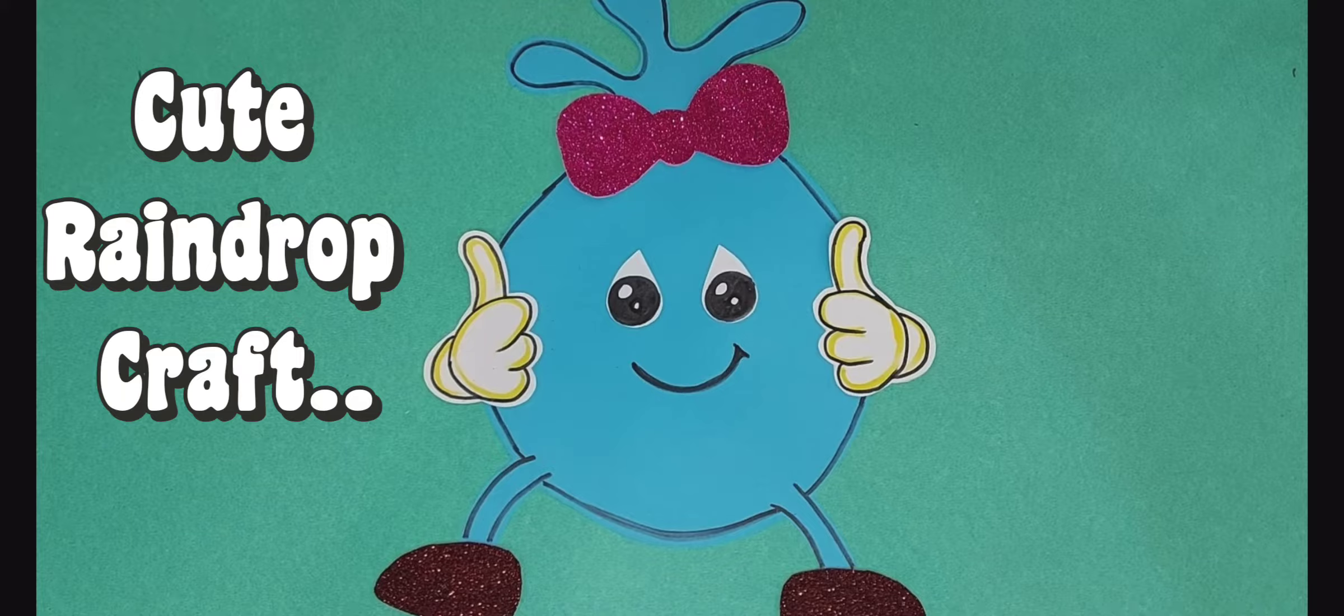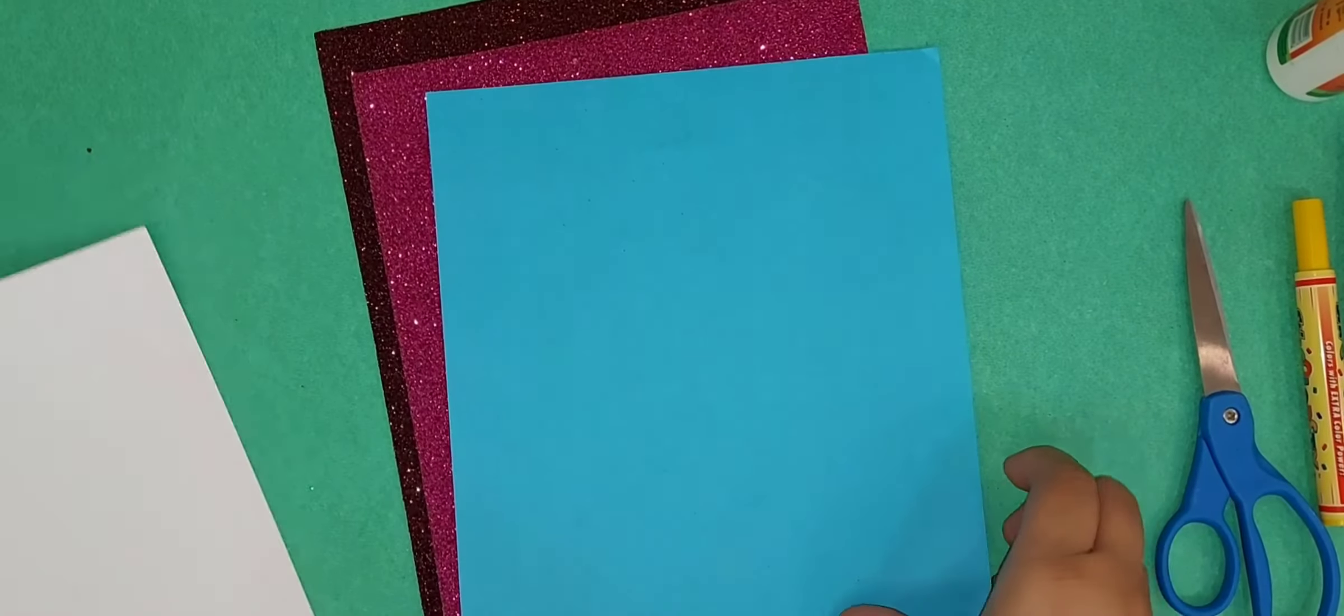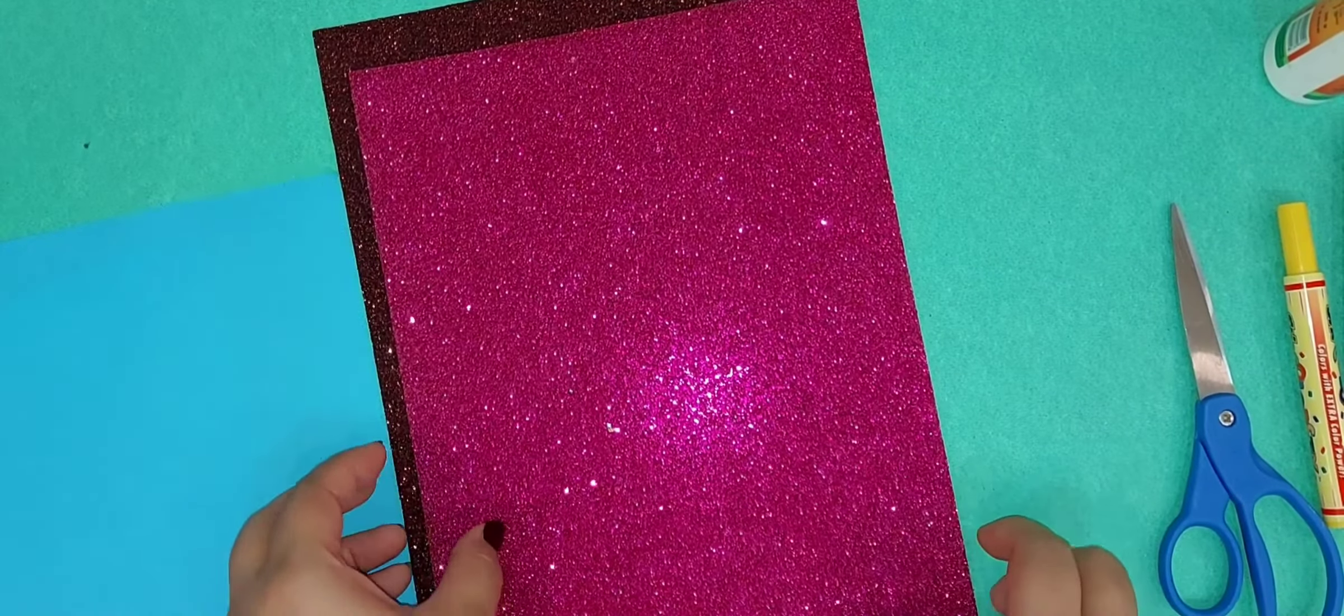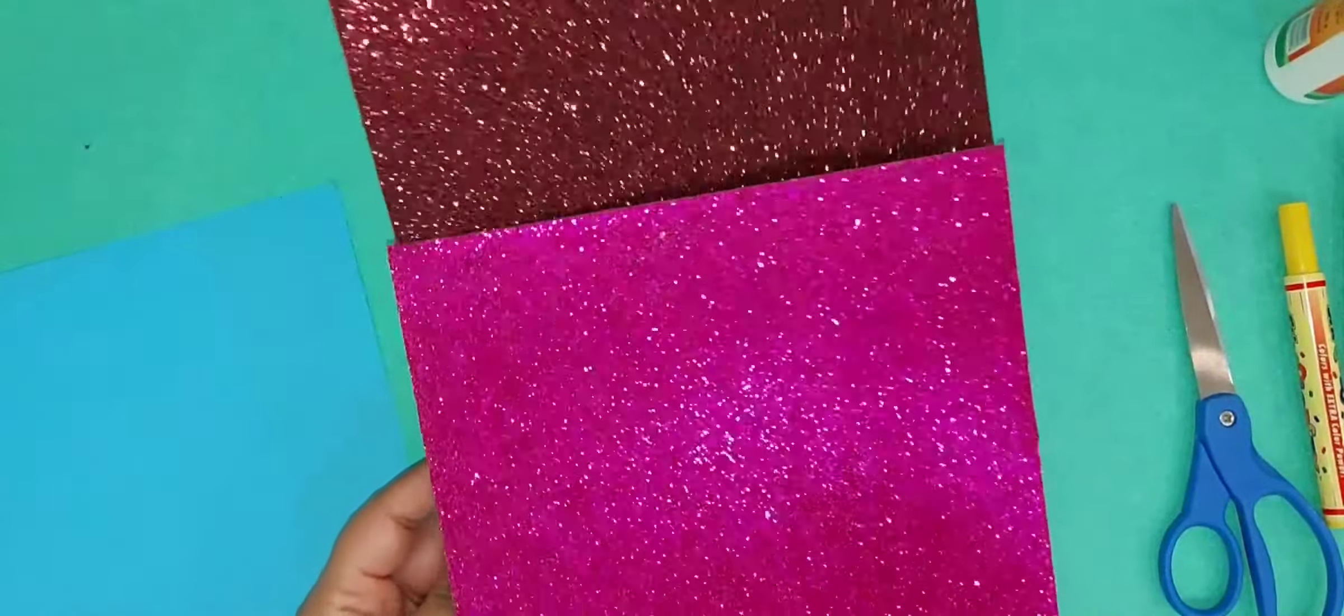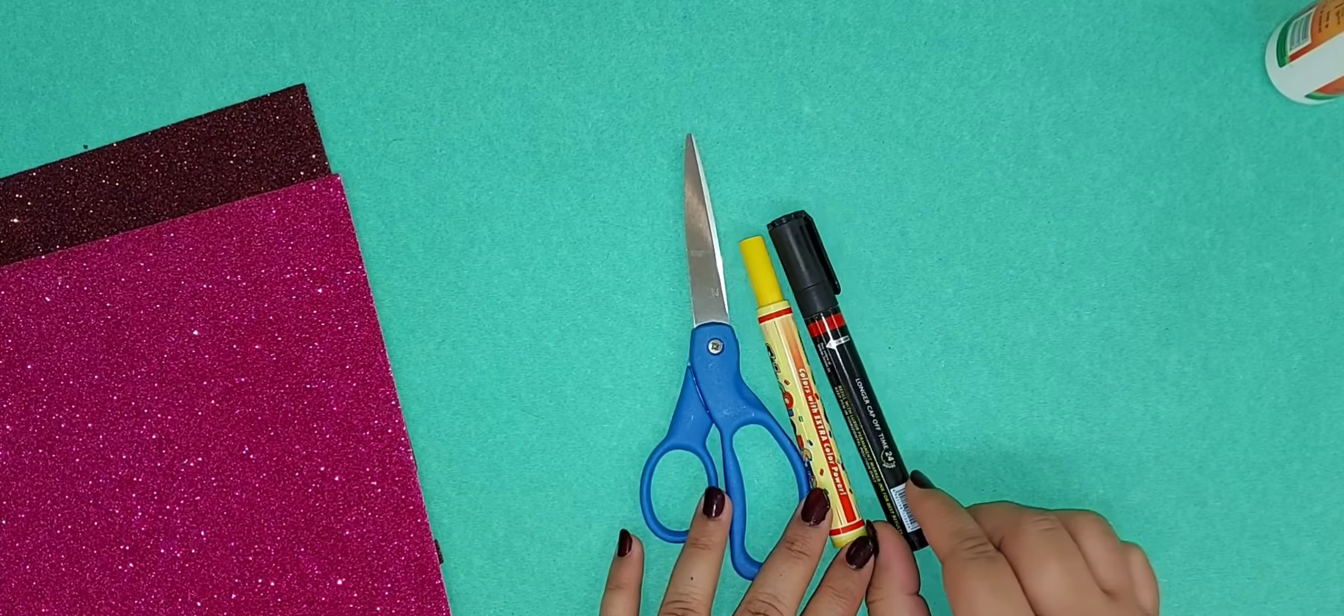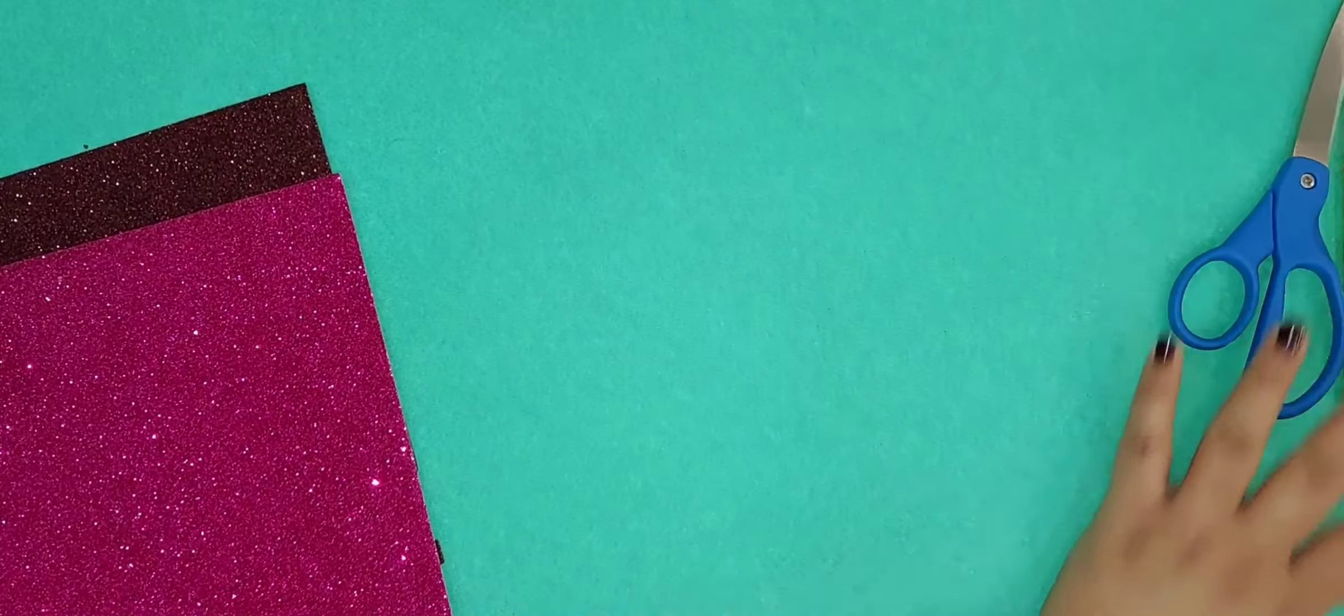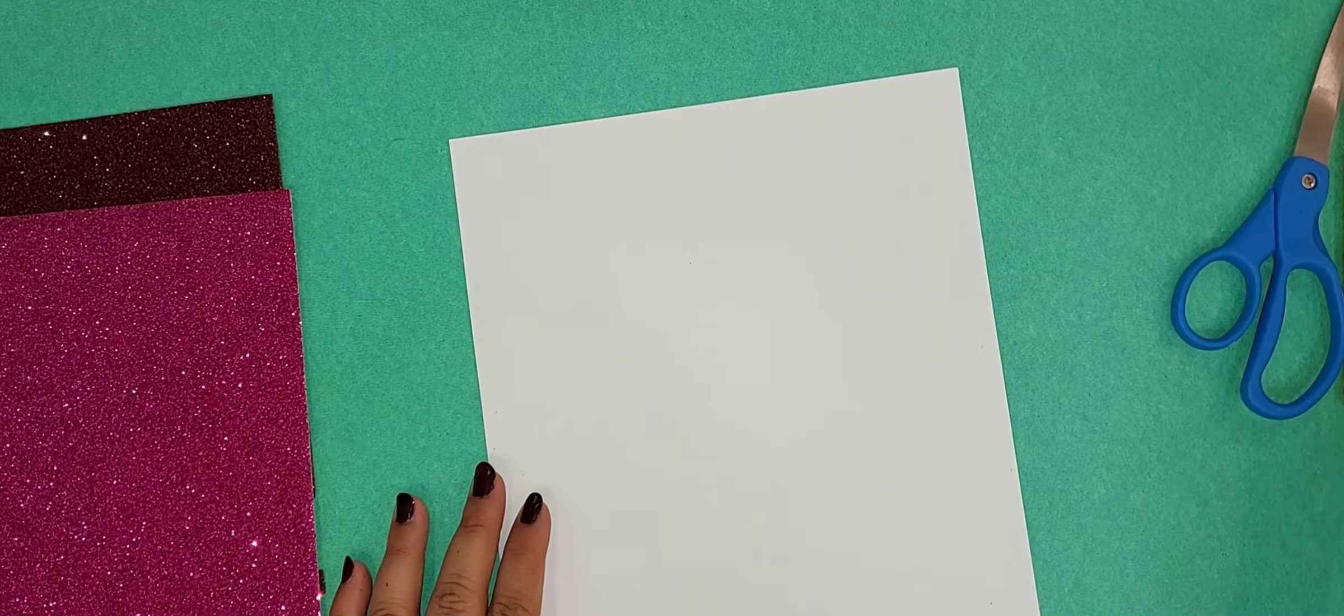Hello everyone, today we will make a cute raindrop craft. For that we need white paper, a blue color sheet, a pink color sheet (I'm using glitter sheets, you can use any sheet), a brown color sheet, a pair of scissors, marker pen, yellow marker, pencil, and glue. So let's start.